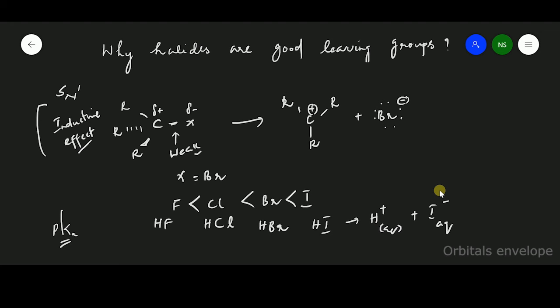So this iodide is highly stable compared to Br minus, Cl minus, F minus. Why? Because due to the size, it could stabilize the charge, negative charge, more effectively than the rest of halogens.